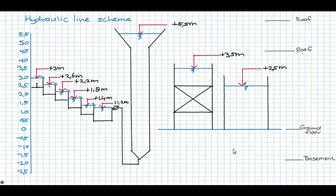Knowing the heights of the different treatment processes and the hydraulic resistances, we can draw the hydraulic line scheme. From the hydraulic line scheme, we can determine the total building height and the number of pumping steps.